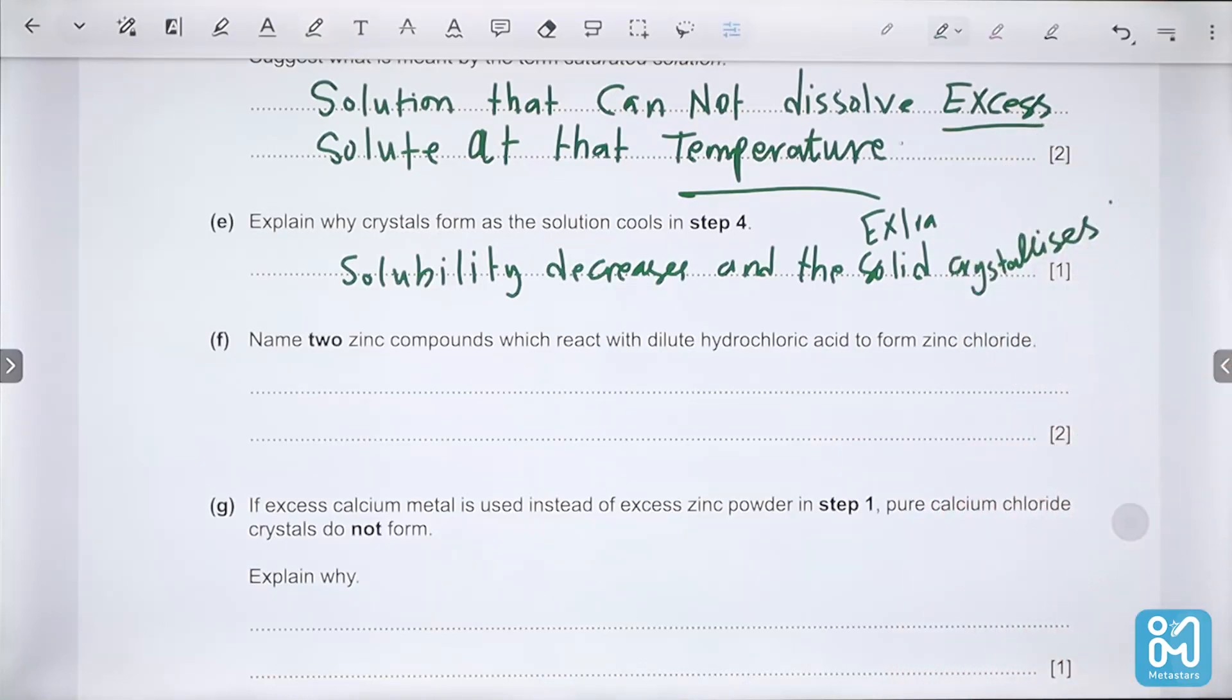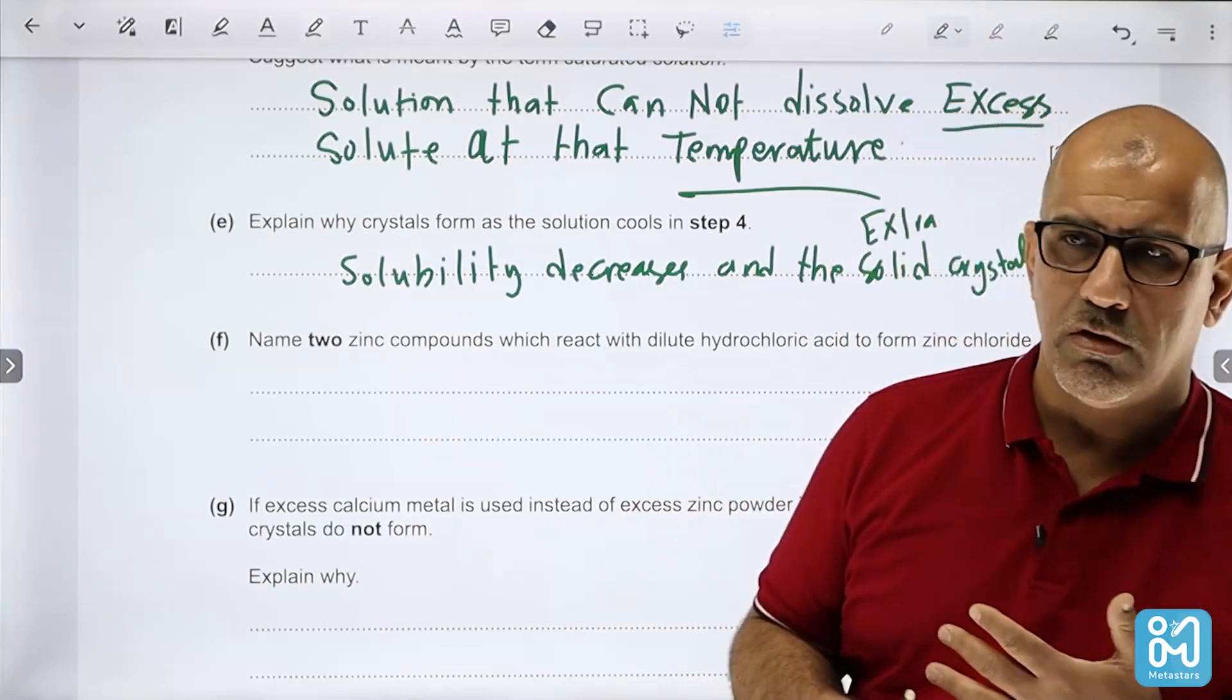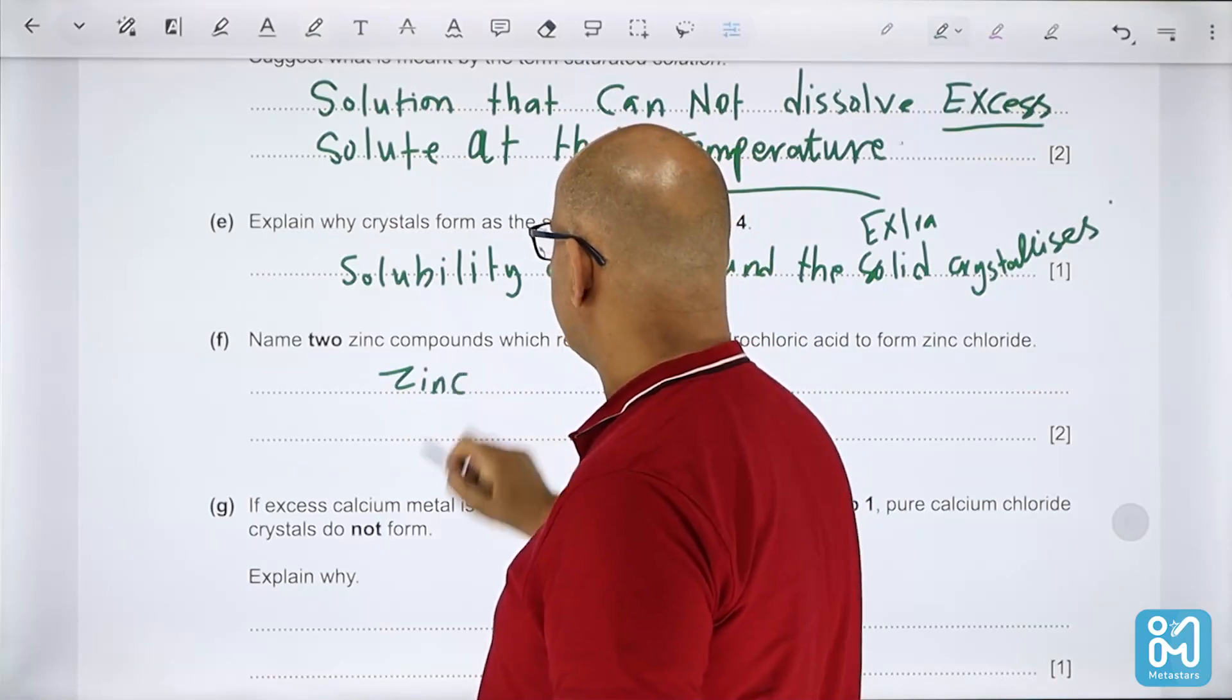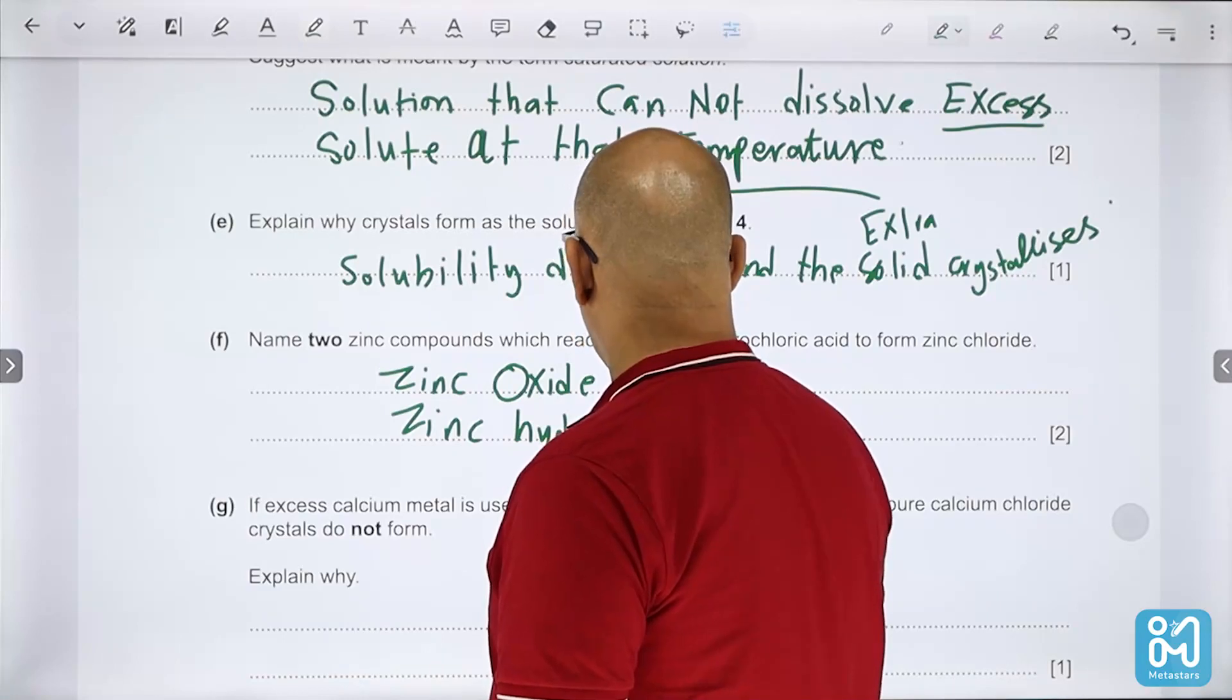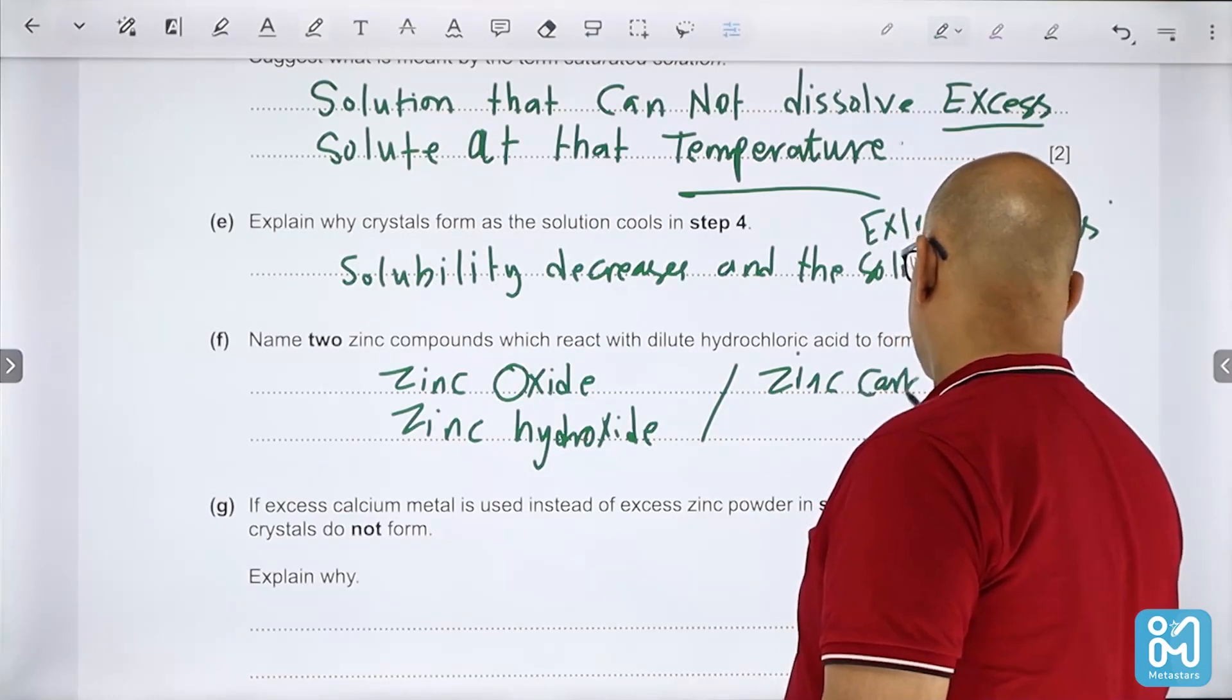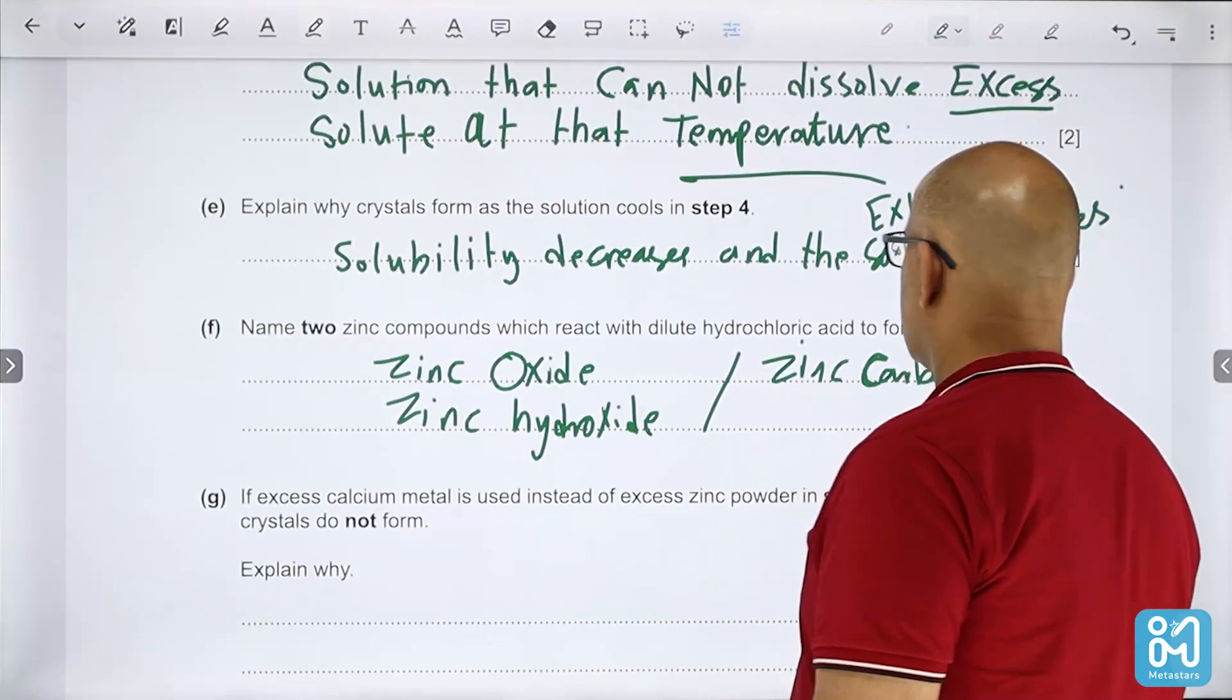Name two zinc compounds which react with dilute hydrochloric acid to form zinc chloride. You should return back to the reactions of acid. We are talking about metal oxide - for example zinc oxide can be used, zinc hydroxide can be used, or you can use zinc carbonate.